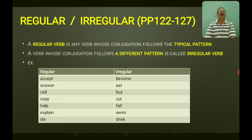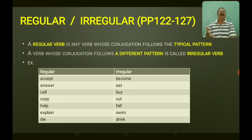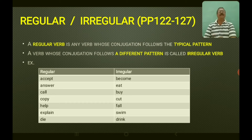'Accept' is a regular verb because the present tense is 'accept,' the past tense is 'accepted,' and the past participle is 'accepted.' So V1 is 'accept,' V2 is 'accepted,' V3 is 'accepted.' Similarly: answer — answered — answered; call — called — called; copy — copied — copied; help — helped — helped; explain — explained — explained; die — died — died. You can see they all follow the same typical pattern, so they are all called regular verbs.